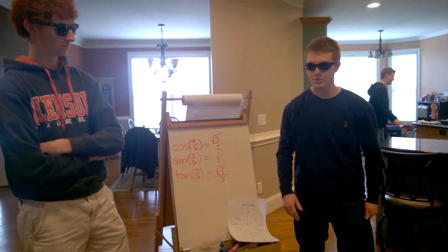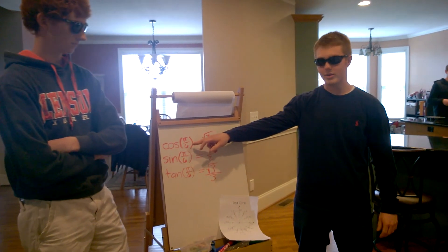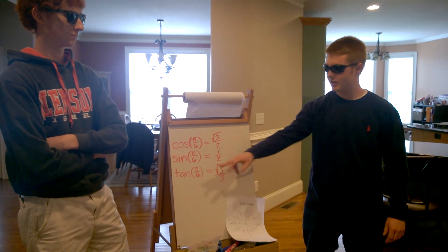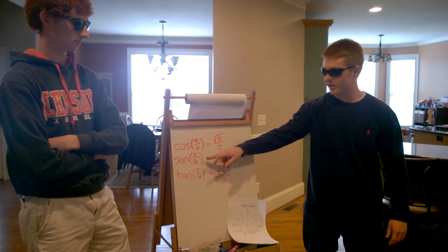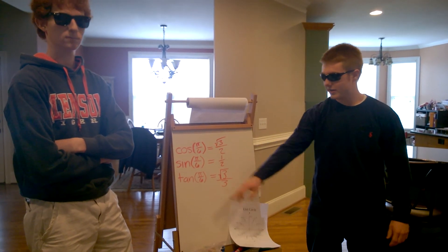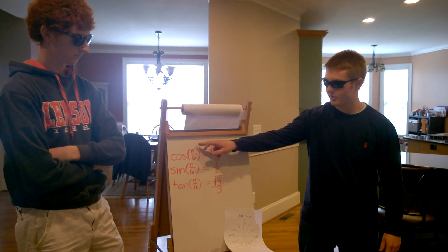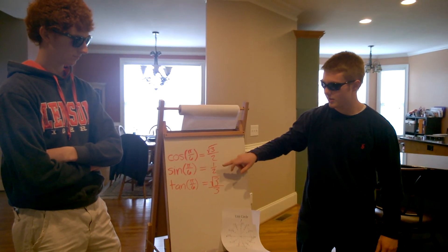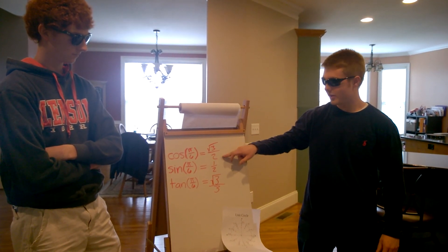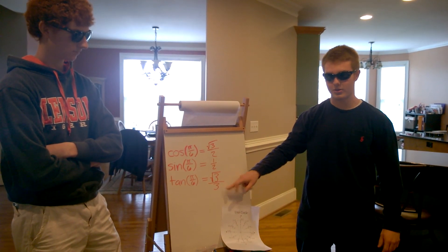Okay, so for example, if you had cosine of pi over 6, that would be the square root of 3 over 2. And the sine of pi over 6 would be 1 half. And the tangent of pi over 6 is actually just sine divided by cosine, so 1 half divided by square root of 3 over 2 is actually just the square root of 3 divided by 3.